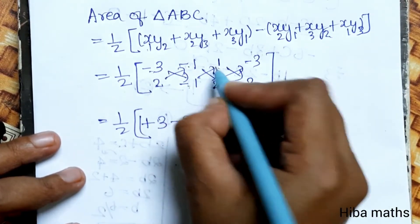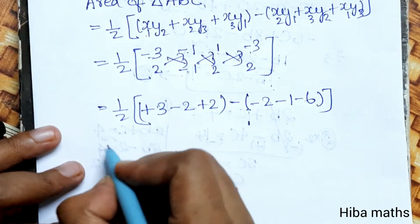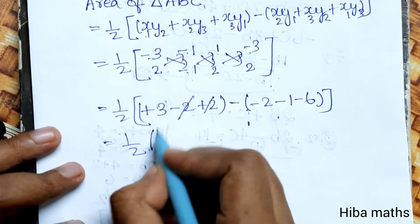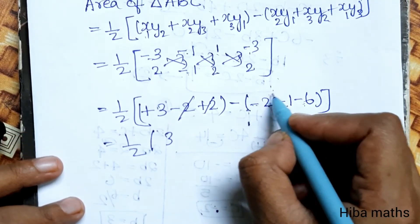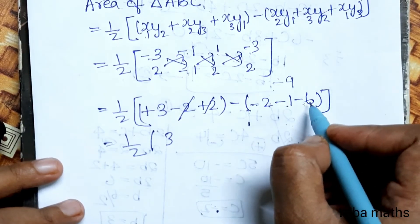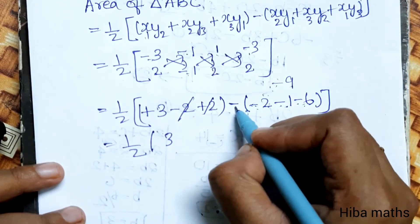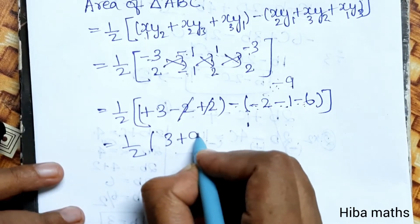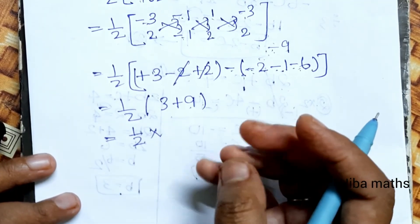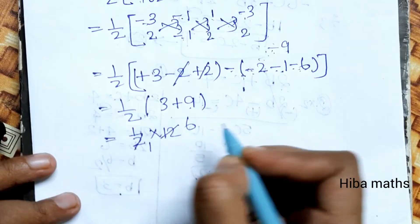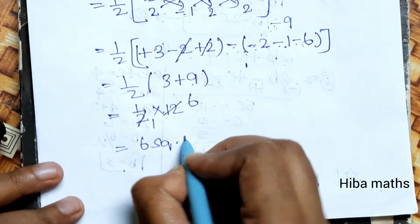Substituting the values: x minus 1, minus 2, minus 1, into 1 minus 1. This gives us: 1/2 times (values working out to) 2 plus 2 cancel, 3 minus 2, minus 1, and considering minus into minus gives plus. The result is 1/2 into 12, which equals 6 square units.